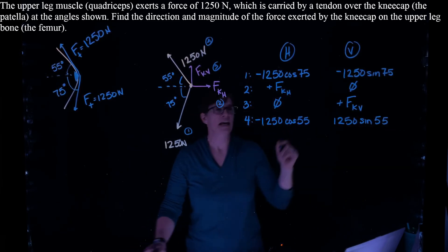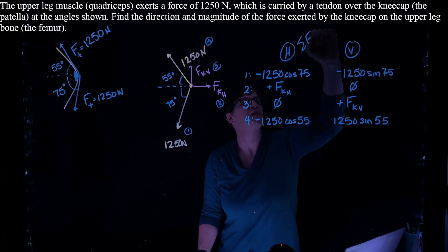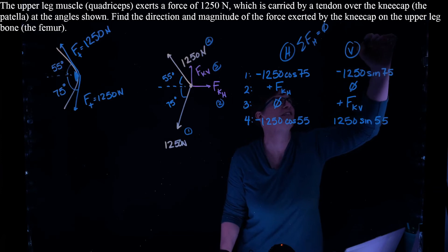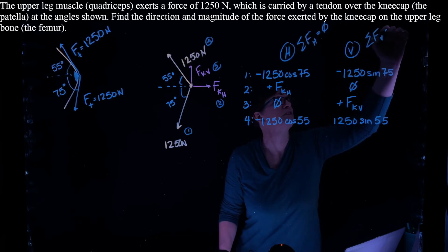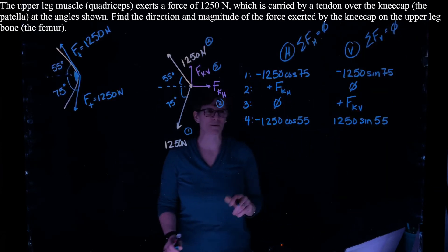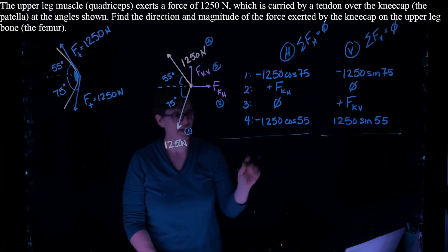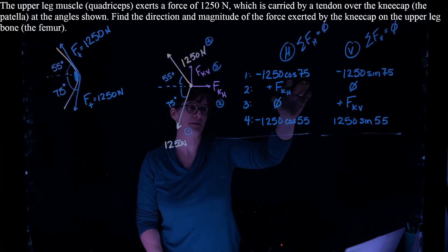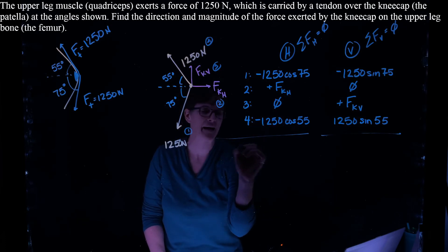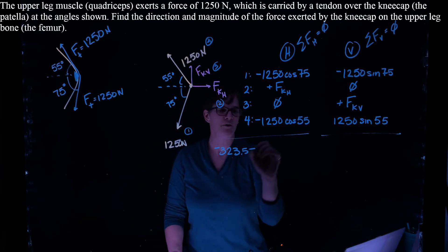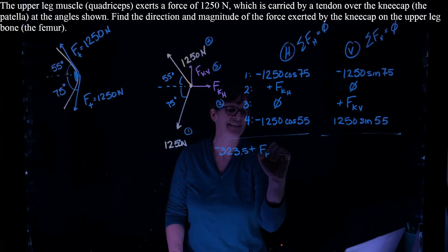All right. So I then sum the forces horizontal are going to equal 0 if this is in a stationary state. And the sum of the vertical forces will also equal 0. So sum these up. I end up with negative 1250 times the cosine of 75 is minus 323.5 plus the force of the knee horizontal.